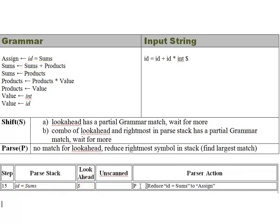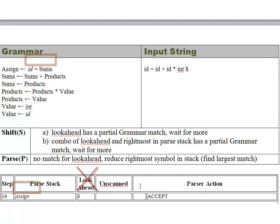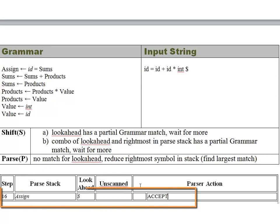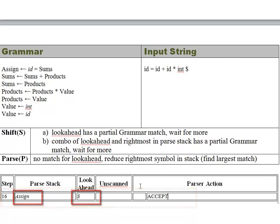In step fifteen, the parse stack is ID equals sums, which matches a grammar production, so we further reduce that to assignment. In step sixteen, we've reduced all the way down to assignment with no look-ahead symbol remaining — that is accepted. As long as we have the start symbol of the grammar and a look-ahead of dollar sign, we are good to go.